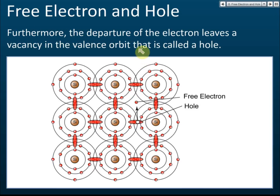After an electron jumps out and becomes a free electron, it leaves a vacancy in the valence orbit. This vacancy is called a hole. The hole can attract other electrons to fill it. Because it attracts electrons, we say the hole carries positive charge.